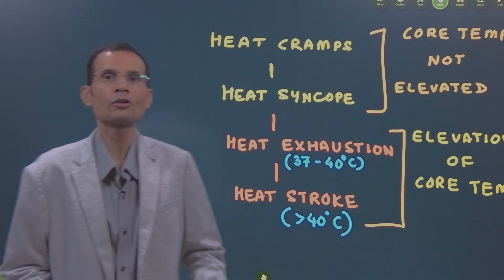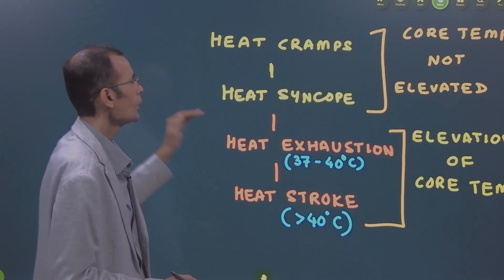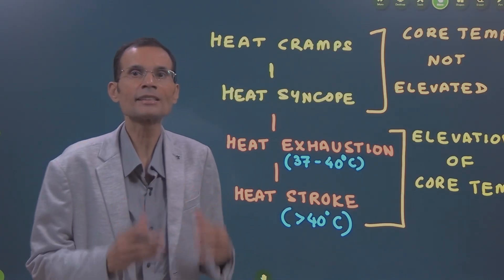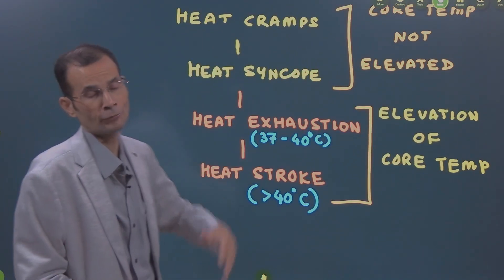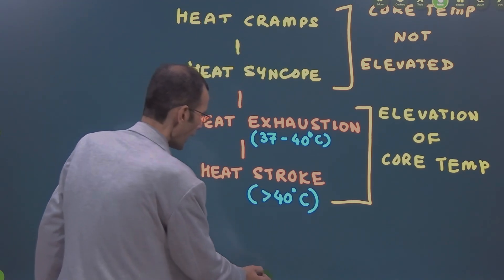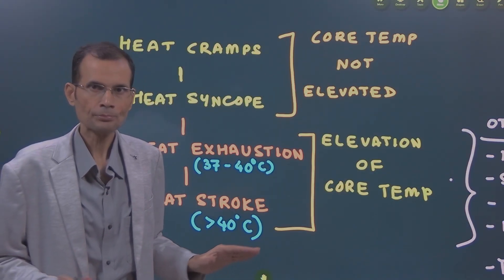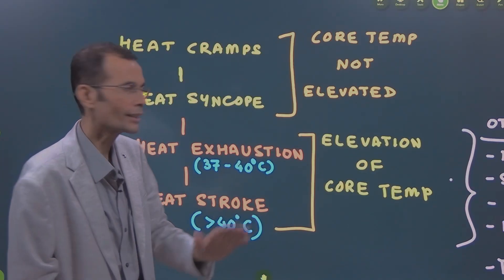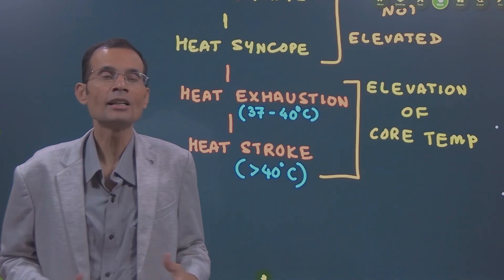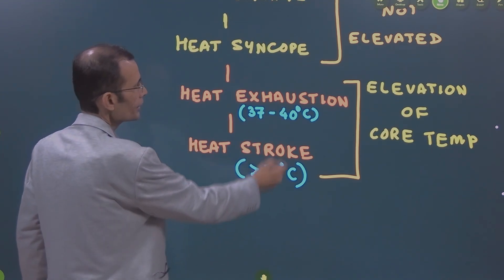There are four types of heat illnesses forming a spectrum. Starting with milder forms like heat cramps and heat syncope, then progressing to heat exhaustion, and heat stroke as the severest form. If heat exhaustion is not treated timely, it may progress to heat stroke. The first two milder illnesses are ones where the core temperature is not elevated, which is a good sign. Whereas the next two are the severe forms in which there is elevation of the core temperature.